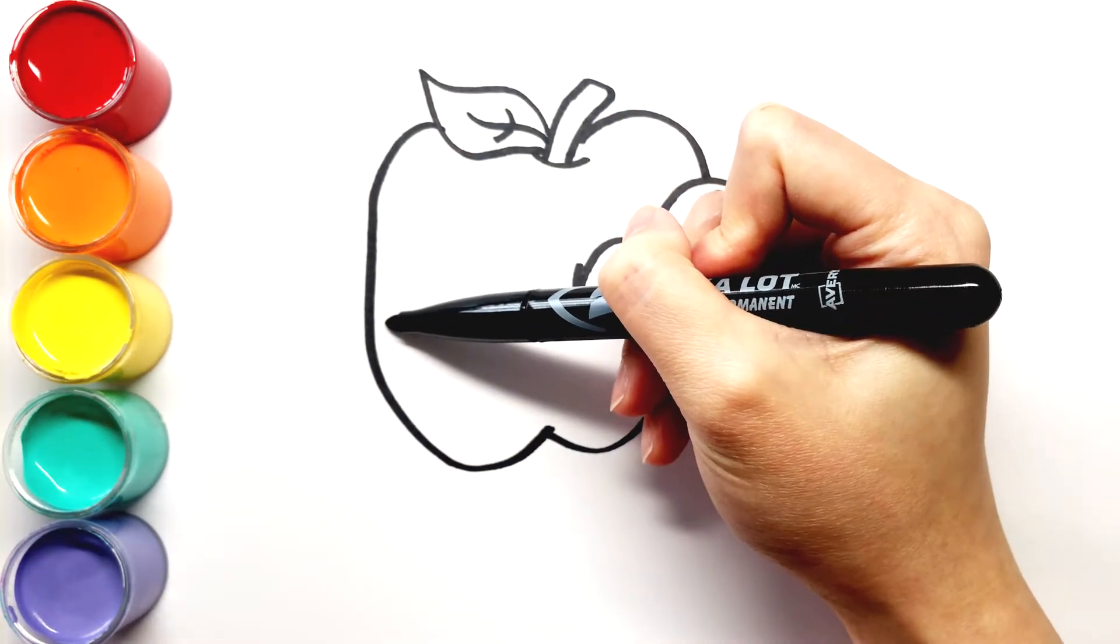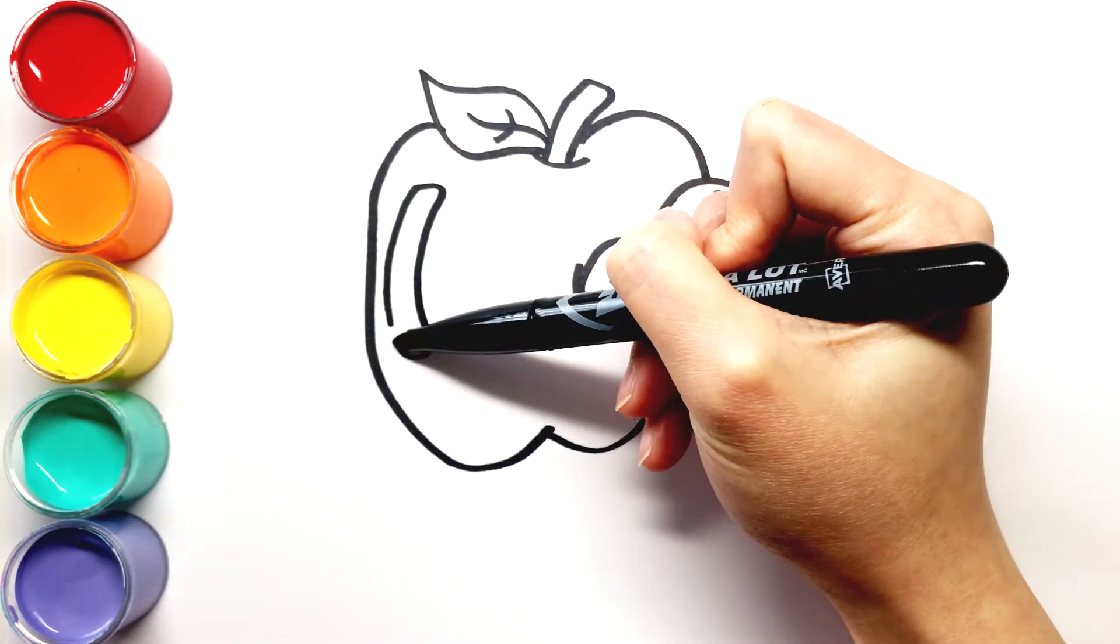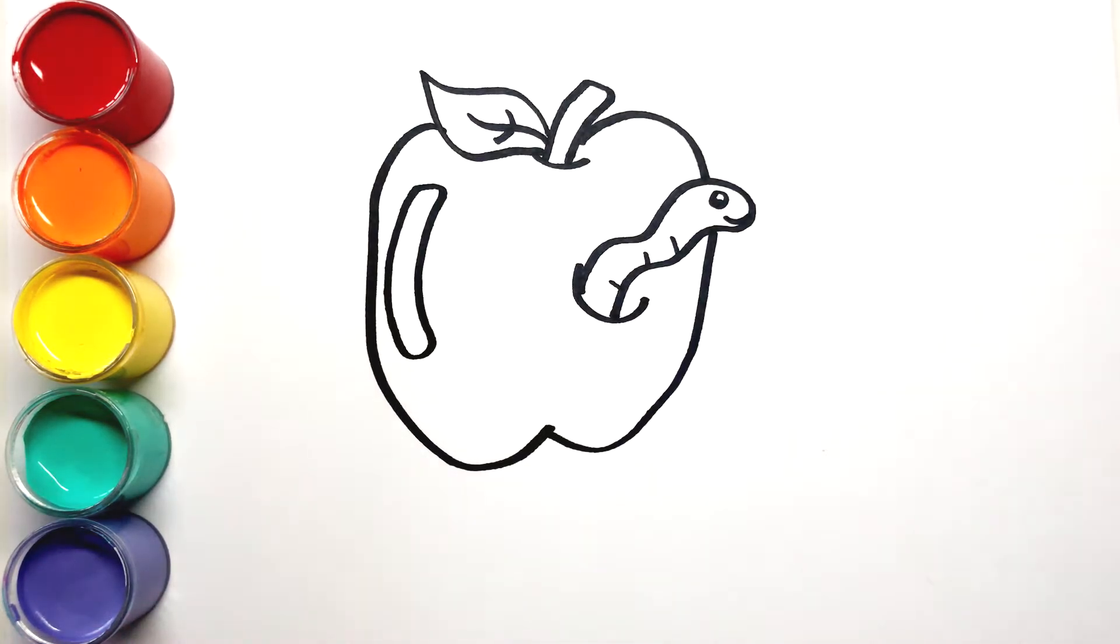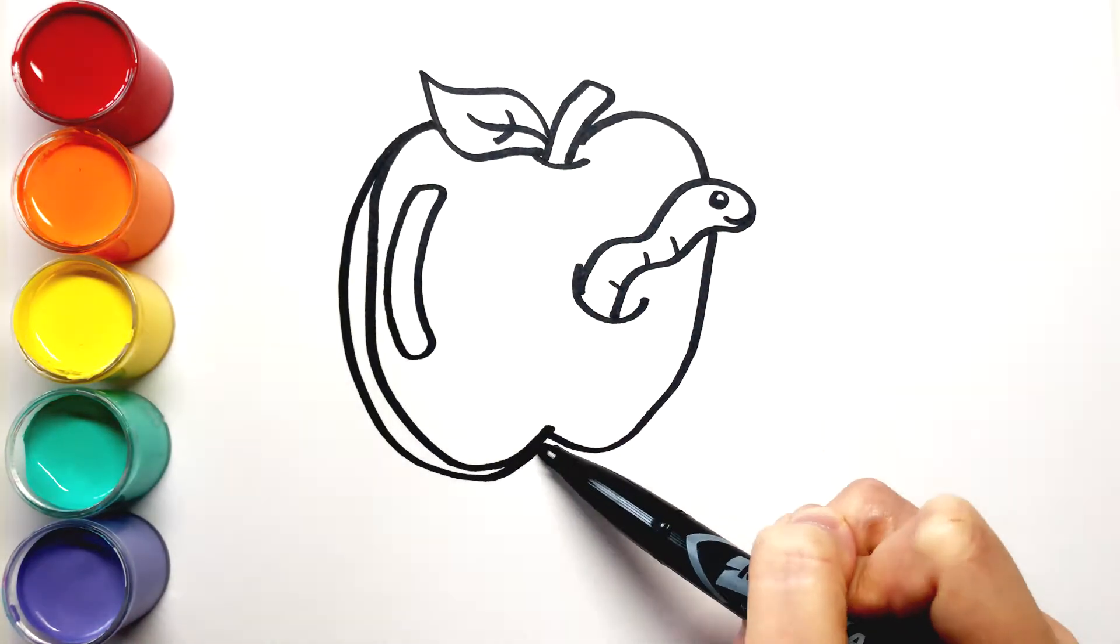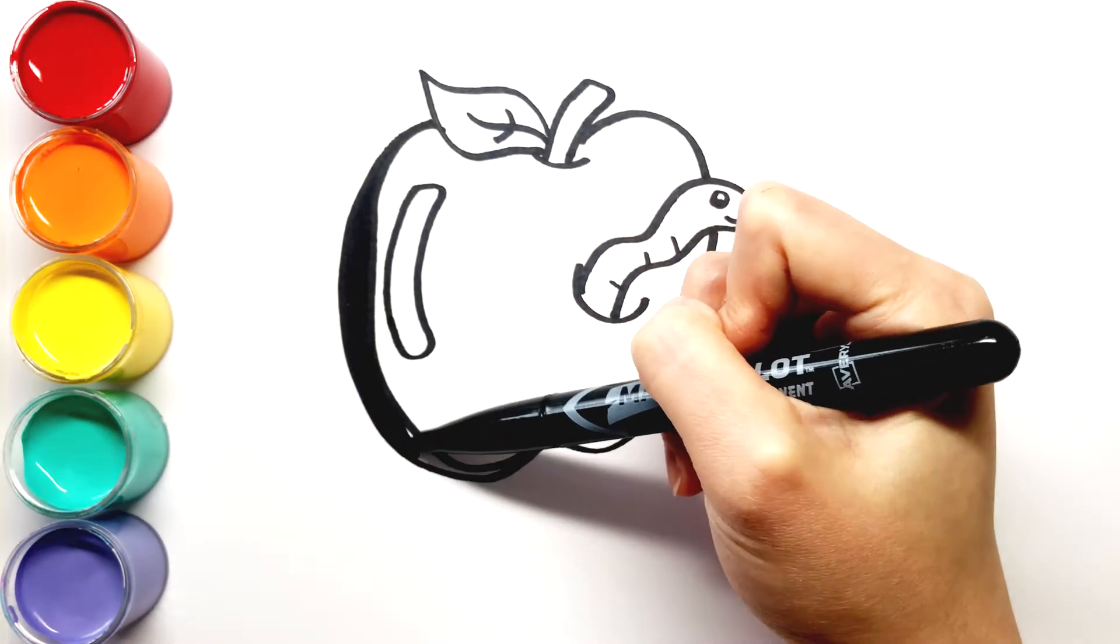For a nice glossy finish, draw some bubble shapes along the apple. Trace the outline to make the apple pop.